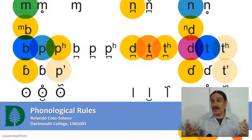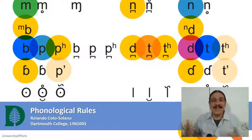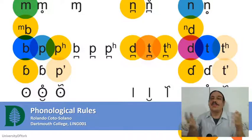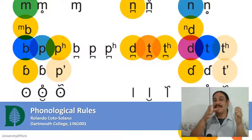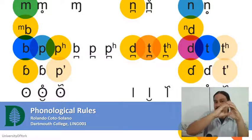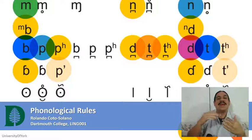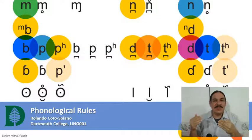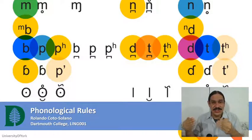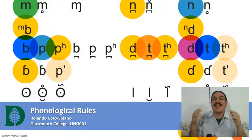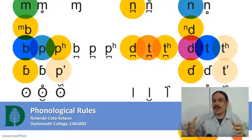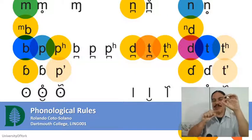Over the course of the week, we have been studying phonemes and allophones. Phonemes are mental representations of the sounds of a language, and the allophones are the physical manifestations of those sounds. However, we still haven't figured out the process to go from one to the other.